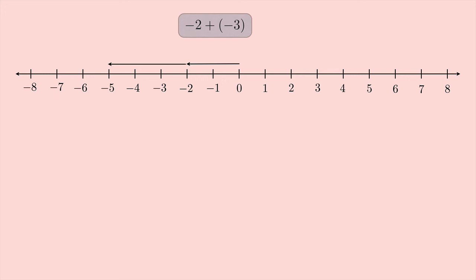And so we see that negative 2 plus negative 3 is negative 5. It's easy. Right, Mr. Orange?